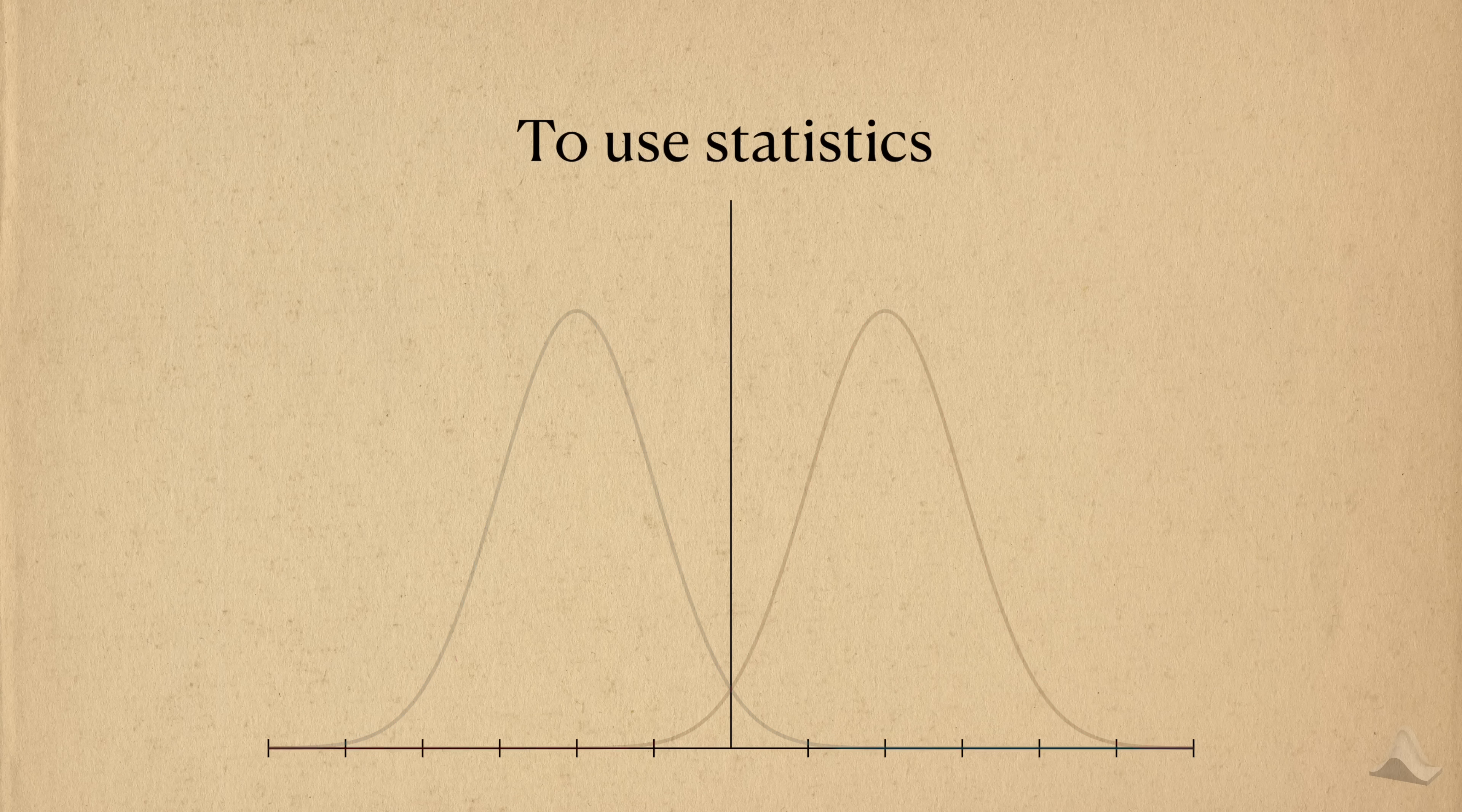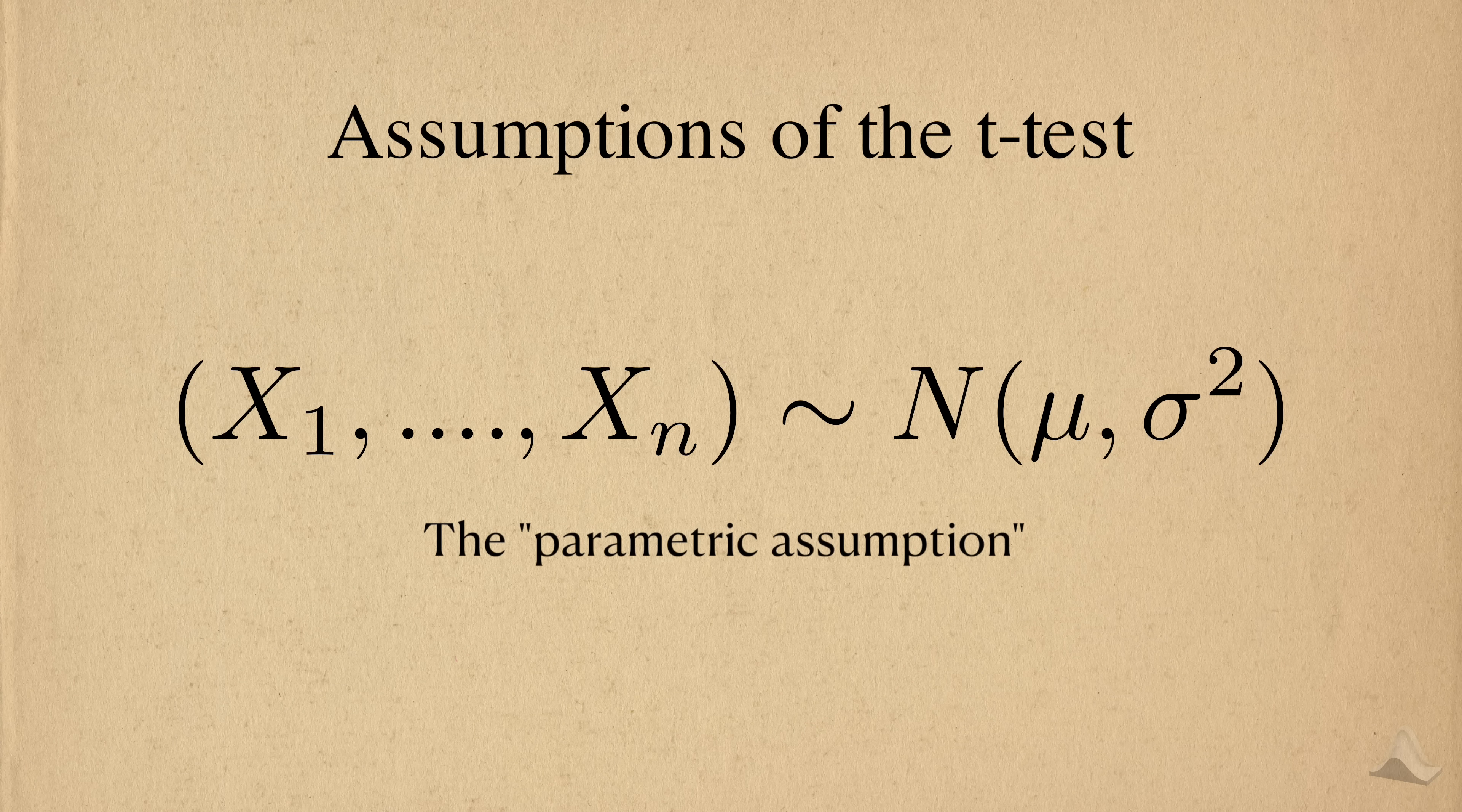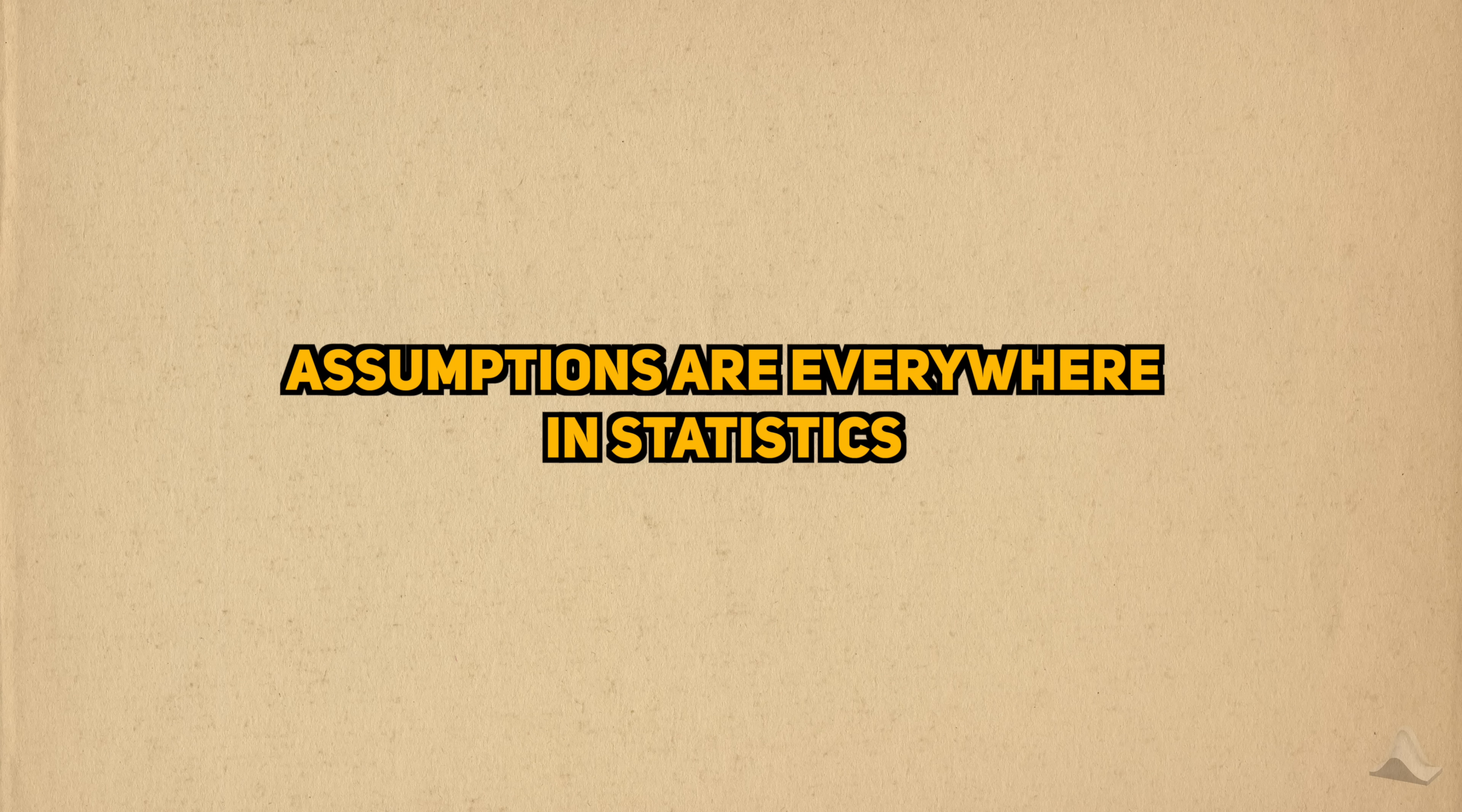To use statistics is to view the world through the lens of mathematical models. By definition, these models are approximations of the real world, and they need various assumptions to be accurate. For example, we often assume that the data come from a specific distribution, like the normal distribution. This is called a parametric assumption, and it's required to give the t-test its characteristic distribution. If we can't assume that, we need to rely on the central limit theorem and all the assumptions associated with that theorem for the t-test to produce good results. Assumptions are everywhere in statistics.